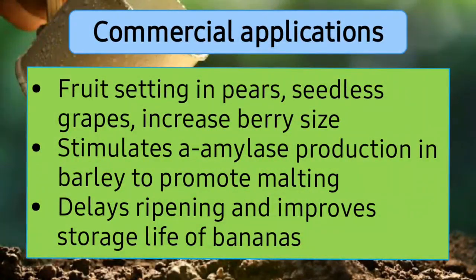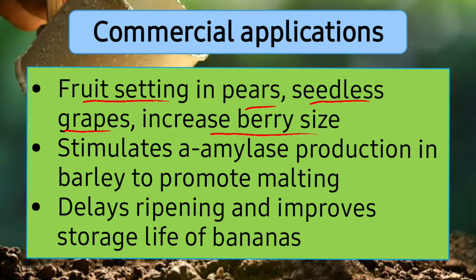Looking at commercial applications of gibberellins: they are most visible in the fruit field. They help in fruit setting in pears and in the production of seedless grapes — which are a result of parthenocarpy, the production of fruit without seeds. They also help in increasing berry size. Gibberellins also stimulate alpha amylase production in barley to promote malting.